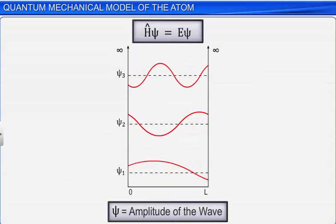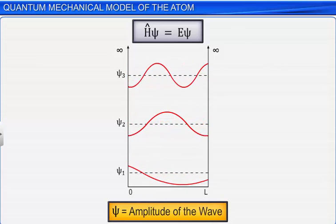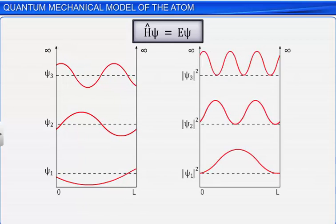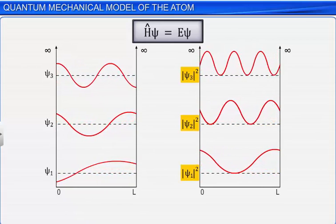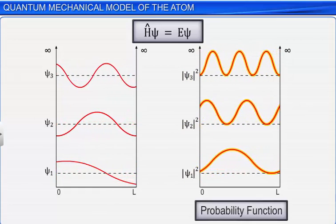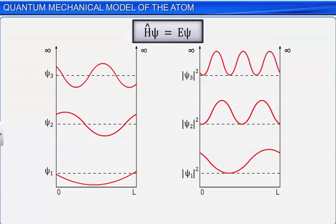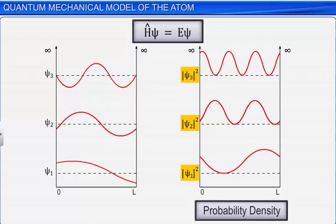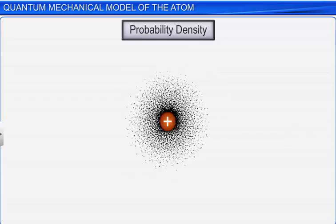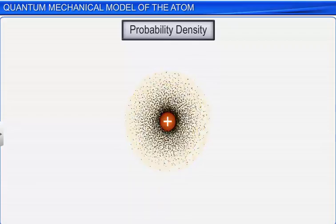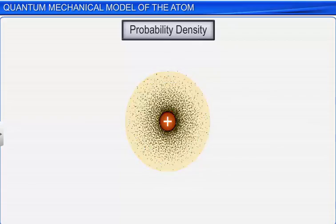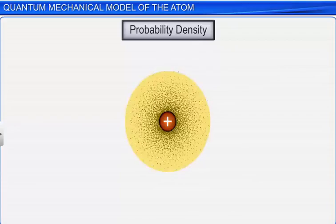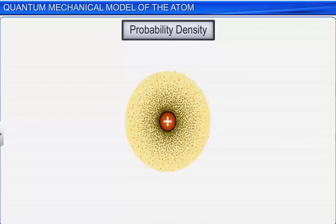The wave function, psi, is a mathematical function that represents the amplitude of the wave. It does not carry any physical significance. Therefore, the square of the amplitude of the electron wave, that is, psi-square, gives the probability of finding the electron at a point within an atom. That is why the function psi-square is called probability density and is always positive. By finding the probability density at different points in an atom, one can predict the region of space around the nucleus within which the probability of finding the electron is the maximum.